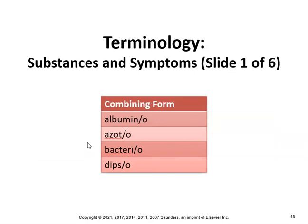Here are more combining forms: albumin gives us albuminuria, meaning protein in the urine. Azot gives us azotemia, meaning nitrogen in the blood. Bacteria gives us bacteriuria, meaning bacteria in the urine — anything ending in -uria refers to something found in the urine.